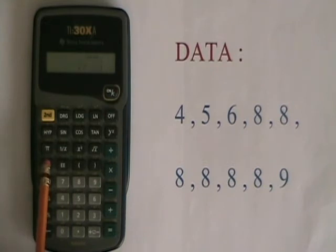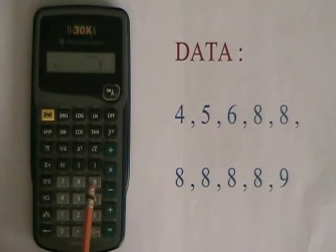Then I do sigma plus. Now it's saying n equals 9 because it just entered six different data values, all of them eighths. Finally, I do 9 sigma plus and all my data is entered.